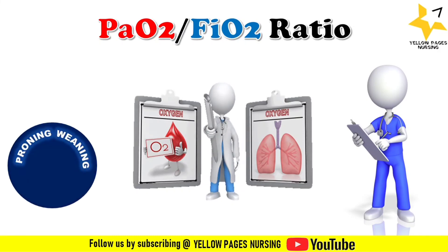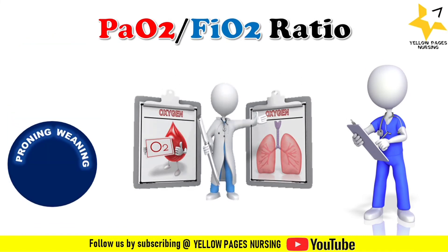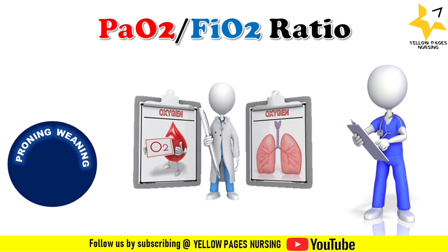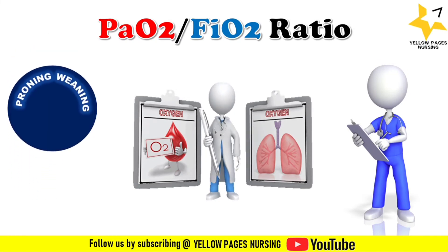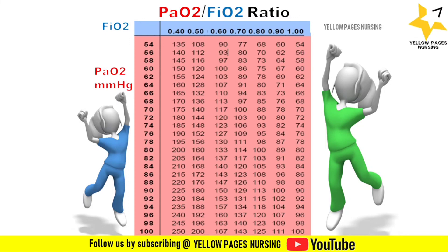In critical care units, PF ratio is documented in many ways. For example, in prone position ventilation it is measured and documented frequently. It is also one of the criteria for weaning a patient from the ventilator, so nurses should be aware of PF ratio and how to calculate it.